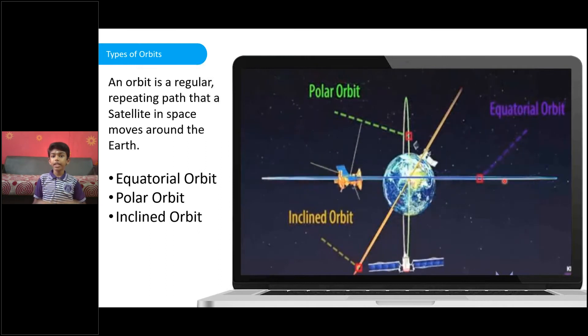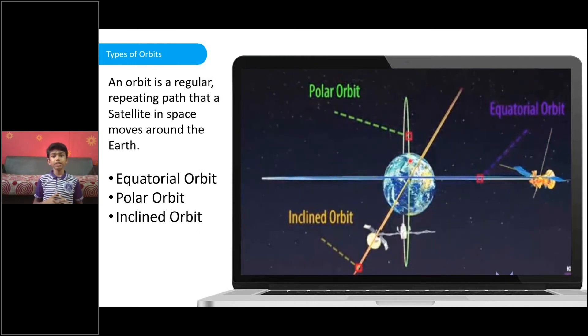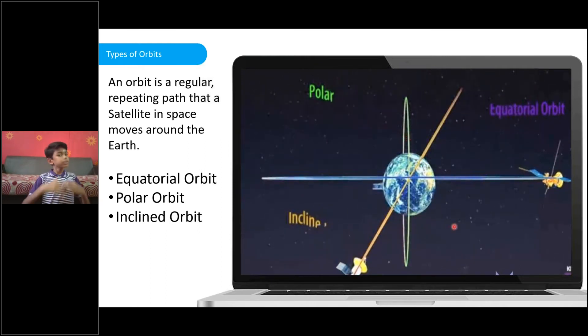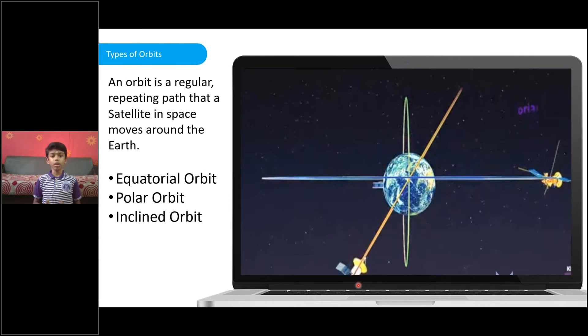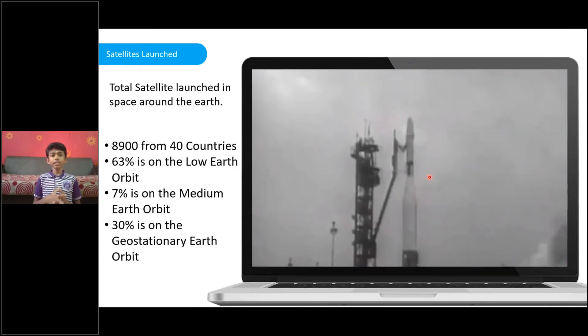Equatorial orbit is when a satellite orbits above the equator. Polar orbit is when a satellite orbits over the North Pole and South Pole. Inclined orbits are orbits other than equatorial and polar.